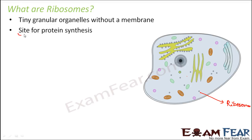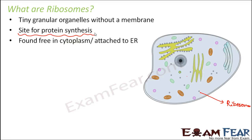Ribosomes are the site for protein synthesis, and that is what makes them so special. Every cell organelle needs proteins, but not all can make their own proteins - except plastids and mitochondria, others do not have ribosomes. Ribosomes synthesize proteins which are then utilized by the rest of the cell. They are found freely in the cytoplasm and also attached to the rough endoplasmic reticulum. The size of ribosomes varies in prokaryotes and eukaryotes - they are slightly bigger in eukaryotic cells.